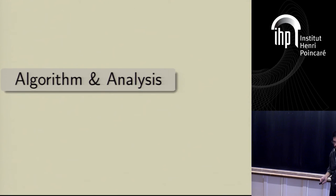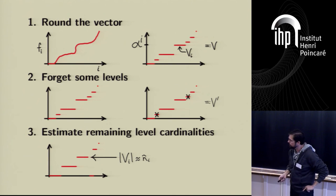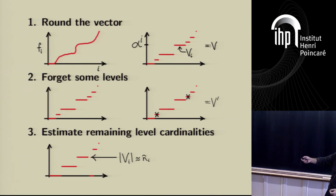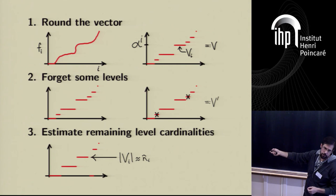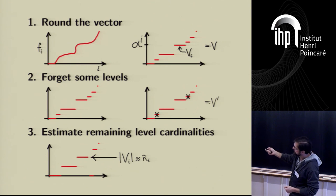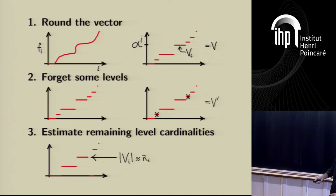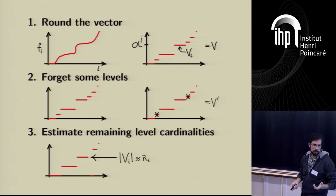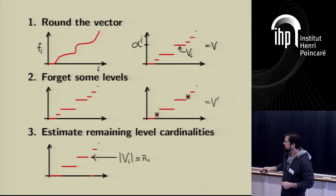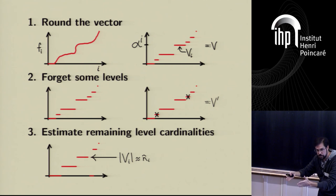The algorithm is hierarchical subsampling. The idea is we round the vector, which naturally gives a small-space representation because there are only log n different levels. We need to determine the size of each level, and that's enough information to compute the norm since it's symmetric. But we can't identify all levels, so we forget some and estimate the rest. We prove that even given some estimates and forgetting some levels, we still have a good approximation. In the end, we get an approximate vector and plug it into an algorithm that computes the norm.